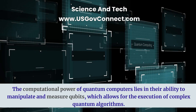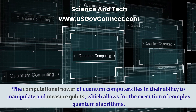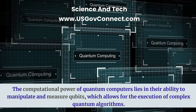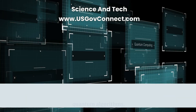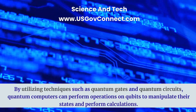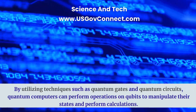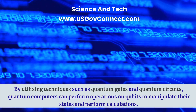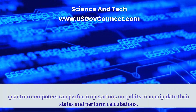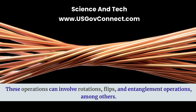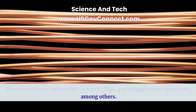The computational power of quantum computers lies in their ability to manipulate and measure qubits, which allows for the execution of complex quantum algorithms. By utilizing techniques such as quantum gates and quantum circuits, quantum computers can perform operations on qubits to manipulate their states and perform calculations. These operations can involve rotations, flips, and entanglement operations, among others.